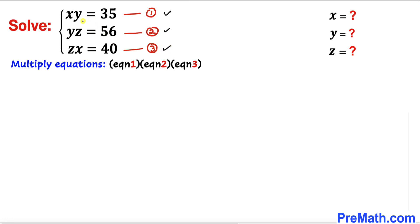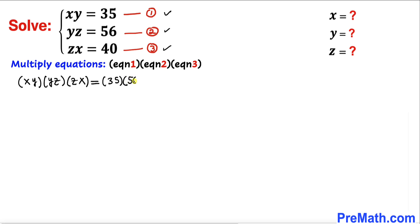Let me go ahead and multiply the left-hand side first, so I can write xy times yz times zx equals, on the right-hand side, 35 times 56 times 40.